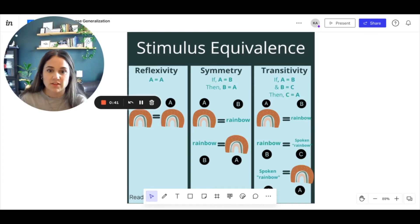Then you have symmetry. So if A is equal to B, then B is equal to A. So maybe you have the written word rainbow, and you have a picture of that same rainbow, and you're asking to match, or you're saying which one is the rainbow, and you have a word, and you have the picture. So you're teaching that those are the same thing.